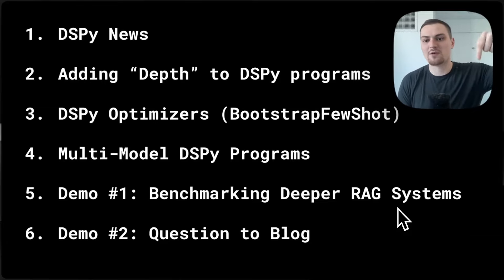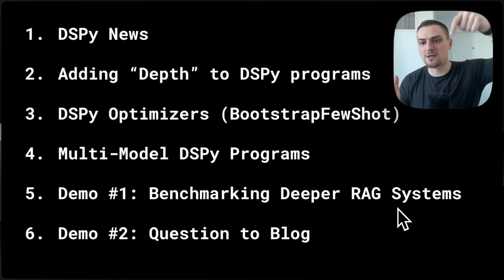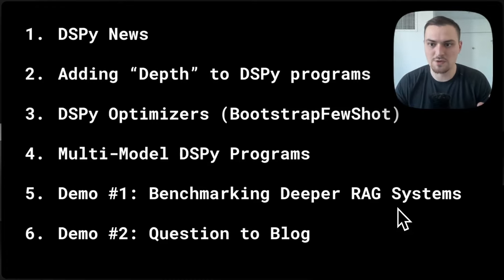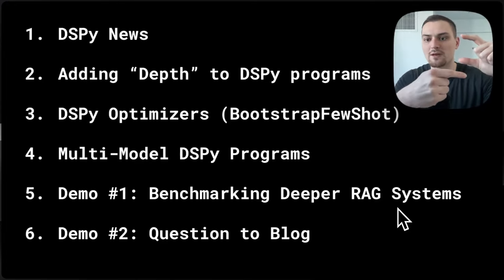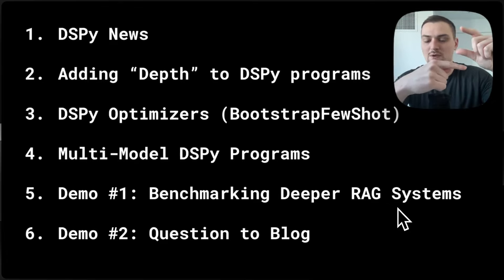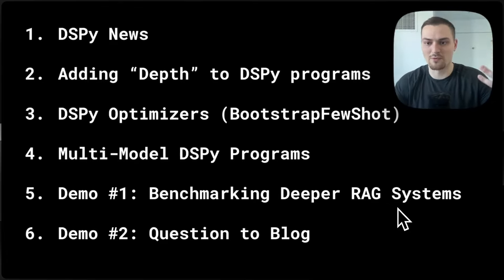You take your inputs — say you have one example of a question — and you run it through your question to blog program. Now for each layer, each component in your program, you have an input-output example to then plug into the prompt for future inferences. Having these few-shot or input-output examples in the prompt, where you plug in your new inference at the end, dramatically helps with the output because it's seeing the behavior of what it's supposed to do.